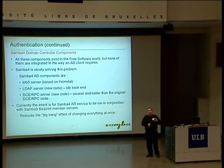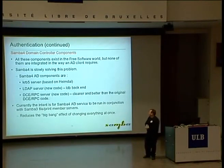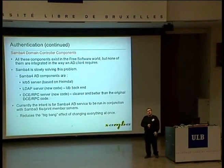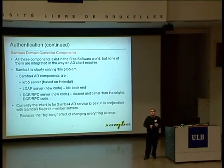All the components exist in the free software world — pieces of them are everywhere — but they're not integrated, and integrating them to look like a seamless whole is a very hard job. Samba 4 is working out how the integration has to work and how the components fit together, partly by writing and replacing those components. The Heimdal Kerberos code is integrated. The LDAP server is new code — not based on an existing LDAP implementation, though I'm not entirely keen on that decision and think in the long run we'll need to start sharing code with other projects. The DCE/RPC code is very clean — actually much nicer than the DCE/RPC code published by the Open Group.